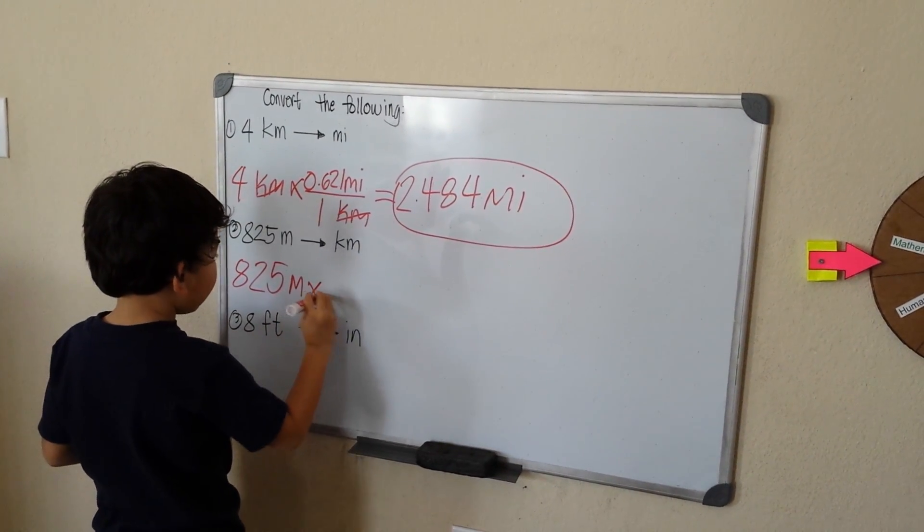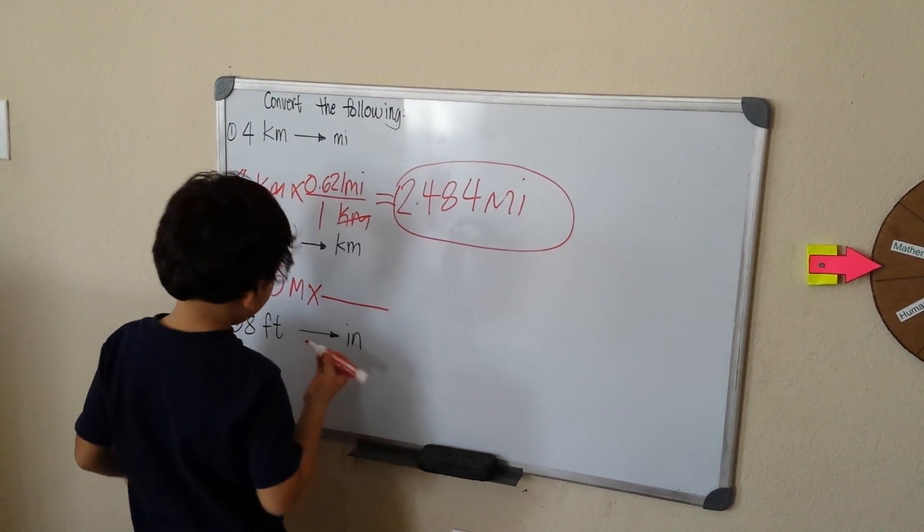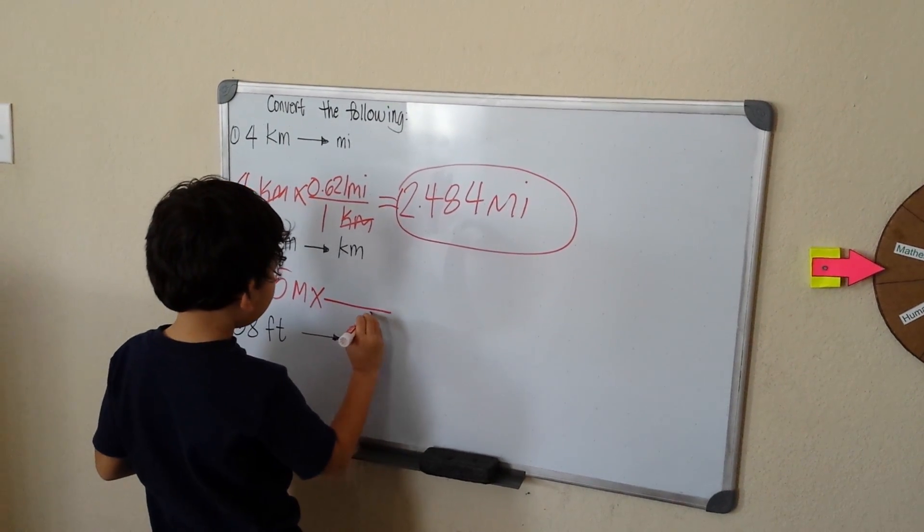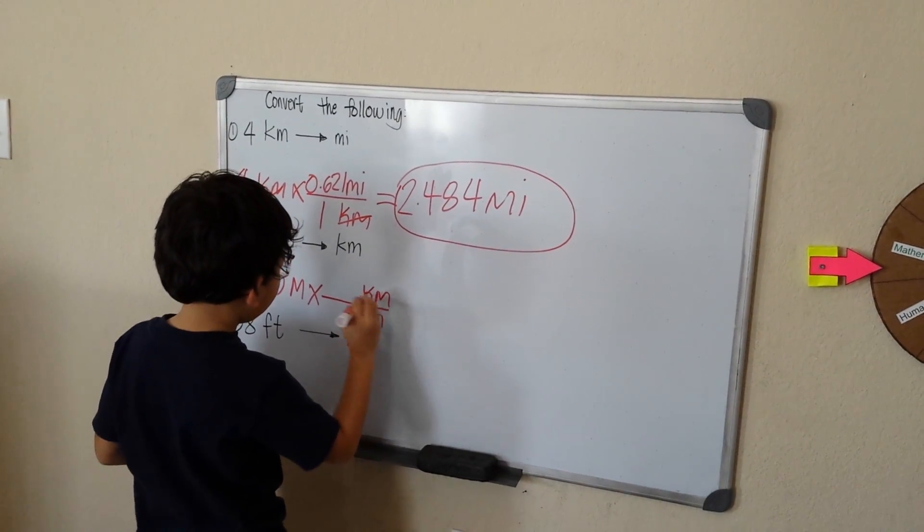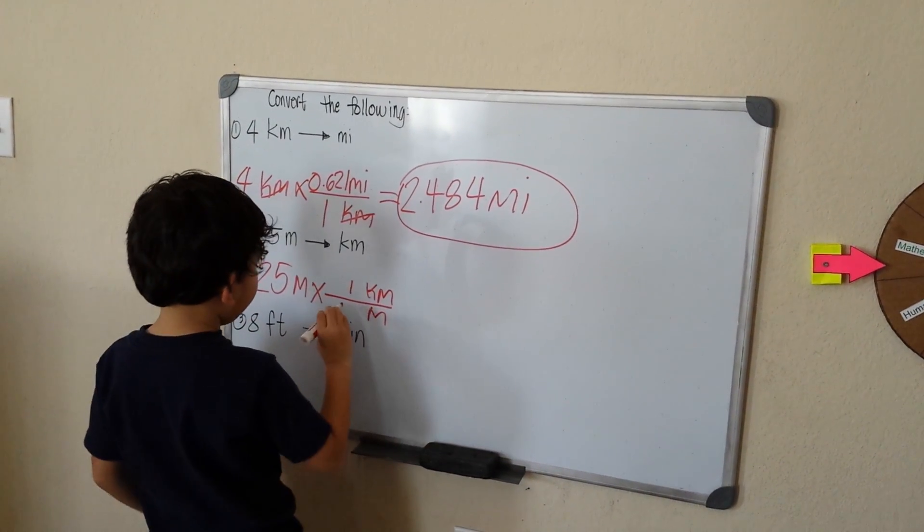825 meters times meters to kilometers. So, in one kilometer, how many meters? 1,000.